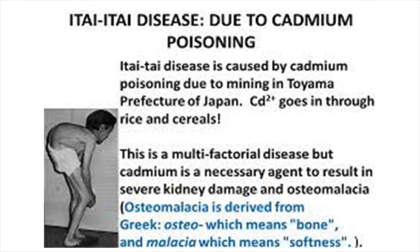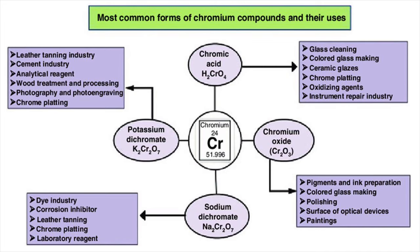A typical example of cadmium poisoning was the outbreak of itai-itai (or 'ouch-ouch') disease, so named to indicate the terrible pain associated with it, in the Jinzu River basin in Japan. The disease made bones fragile; thousands of people died through micro-fracture of bones and thousands more were affected by this bone disease. It was caused by the consumption of cadmium-contaminated rice from fields irrigated using water from the Jinzu River, which had been contaminated with cadmium by drainage water from surrounding mines.